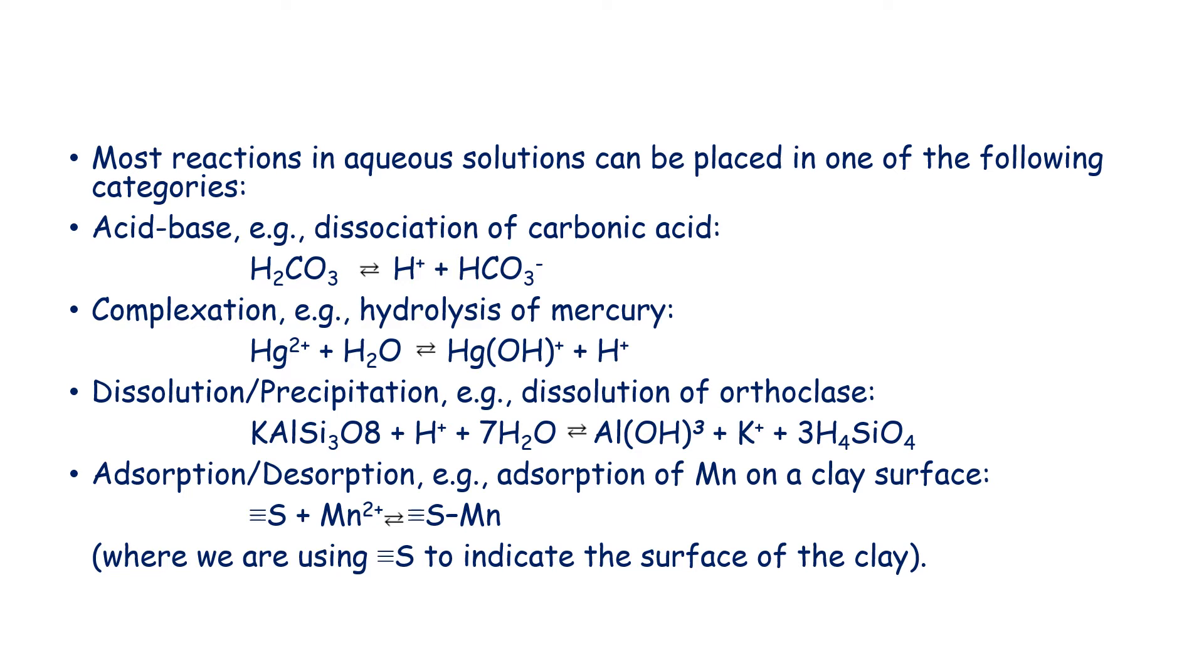You have complexation, example hydrolysis of mercury where Hg plus water gives you Hg(OH) plus H plus. Then you have dissolution and precipitation. Example: dissolution of orthoclase, this is potassium feldspar. So you have KAlSi3O8 plus H plus plus water to give you Al(OH)3 plus potassium plus H4SiO4.